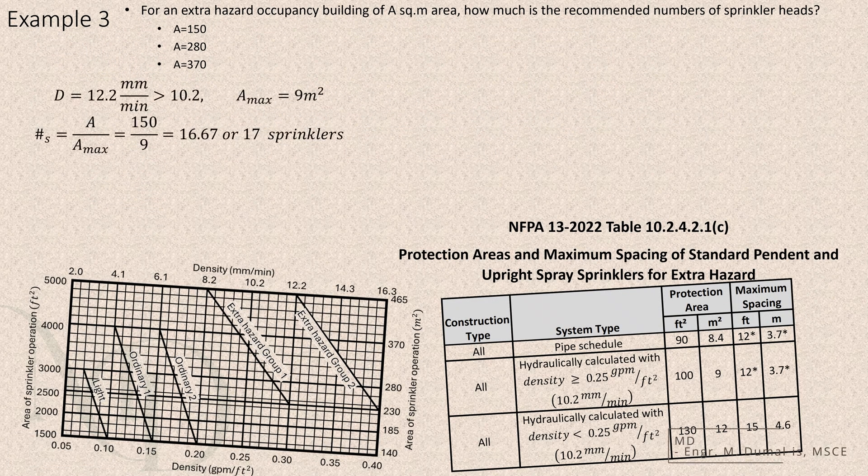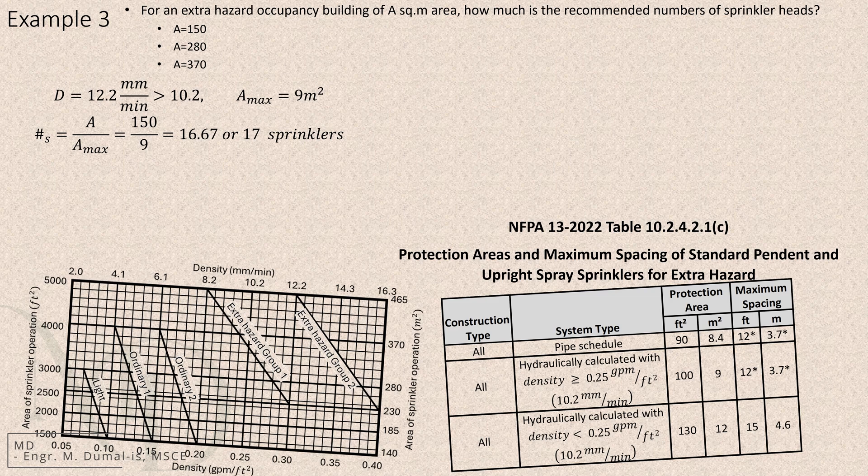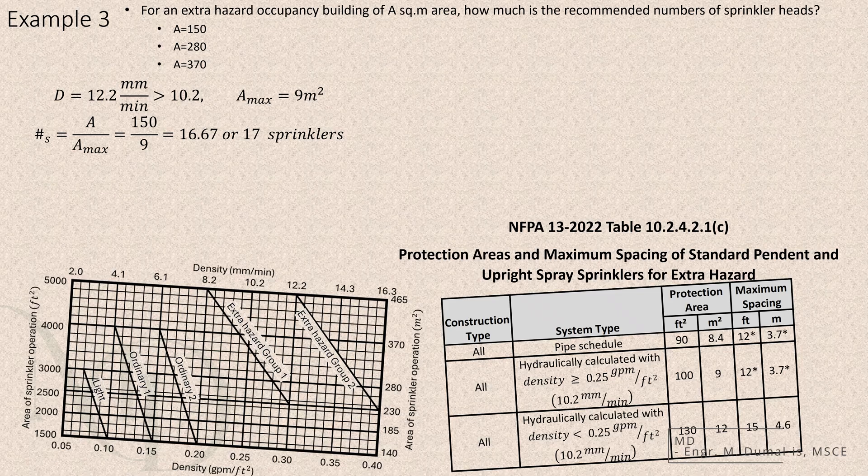First, we identify the design density from the area density curve for extra hazard group 1 and match the total area to the curve. For the first case, the total area is 150 square meters, which is less than the minimum area of 230 square meters. Because of that, we use the minimum density of 12.2 millimeters per minute from the curve.